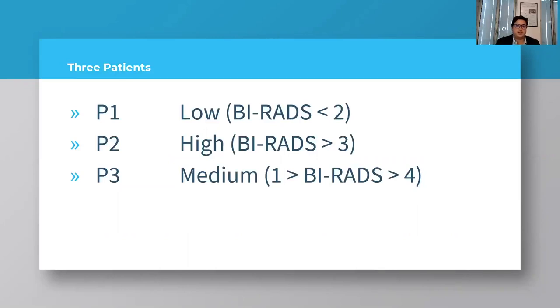Then we have patient two, a high severity BI-RADS, higher than three. And patient three, medium severity, between two and three BI-RADS.